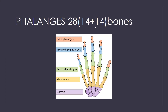Now let us count the phalanges — 14 in one hand. So 14 plus 14 equals 28. You will find 28 phalanges in total across both hands — 14 on the right side and 14 on the left side — comprising proximal, intermediate, and distal phalanges.